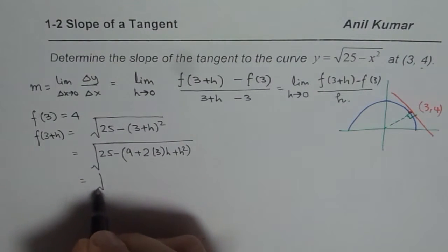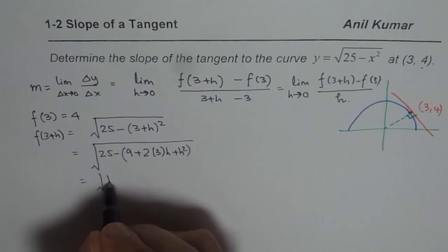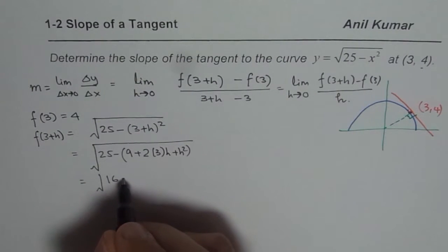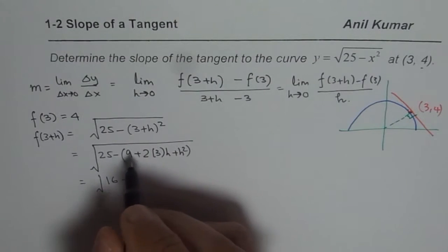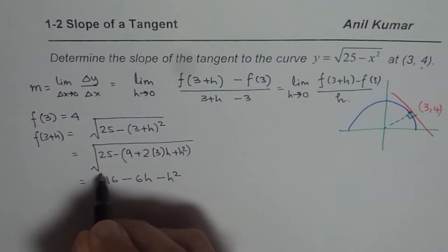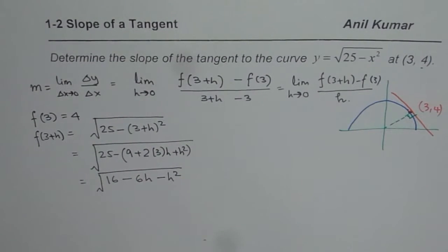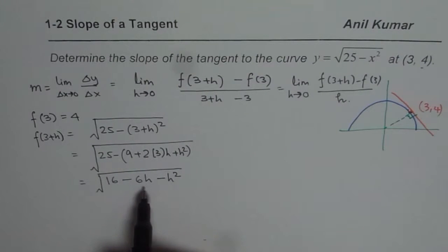Now you can open this bracket. So 25 minus 9 gives you 16 and 2 times 3 is, with this negative, all of them will become negative. So we will write this as 16 minus 6h minus h square. So that is f of 3 plus h.